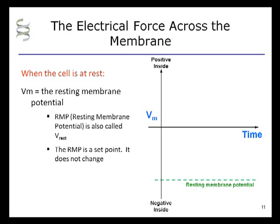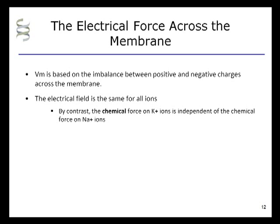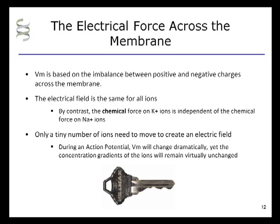VM is based on the imbalance between positive and negative charges across the membrane. Because VM is related to the electric field, it is the same for all ions. By contrast, the chemical or diffusional force on potassium ions is effectively independent of the chemical force on sodium ions. During the action potential, VM changes but the chemical forces on each ion do not change. Only a tiny number of ions need to move across the membrane to create an electric field — this is the key to understanding ion movements during an action potential. VM will change dramatically, yet the concentration gradients of the ions across the cell membrane will remain virtually unchanged.